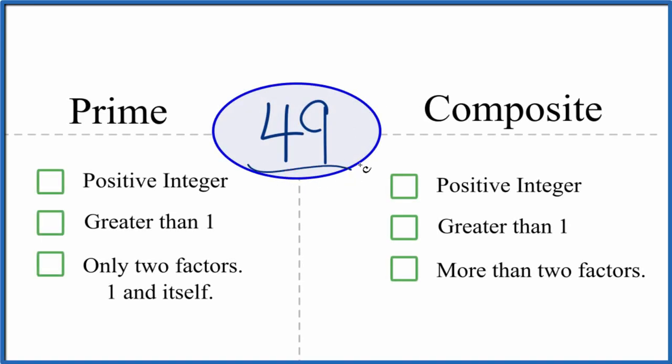Let's take a look at whether 49 is a prime or a composite number. And here's how you can tell. So let's look first to see whether 49 is prime.